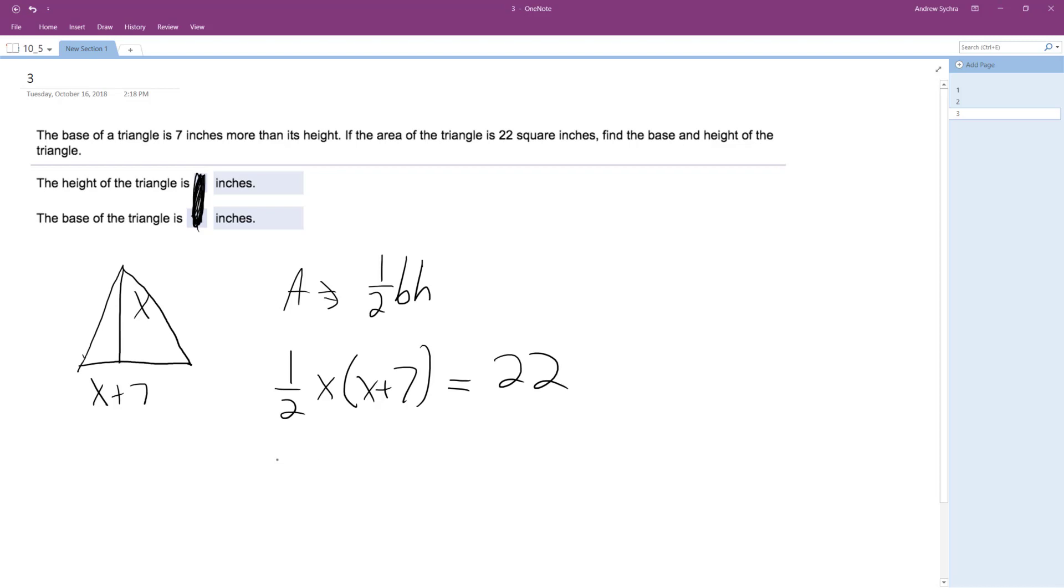So we end up with, I'll multiply each side by 2. So I'm going to have x squared plus 7x is equal to 44. So then x squared plus 7x minus 44 equals 0.